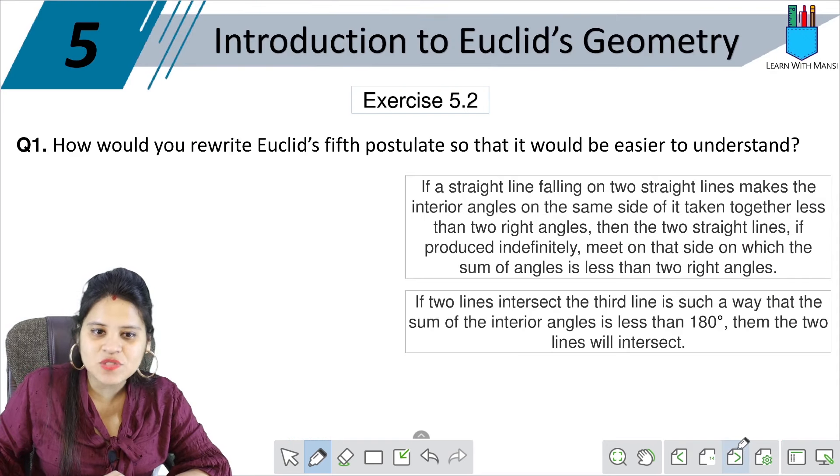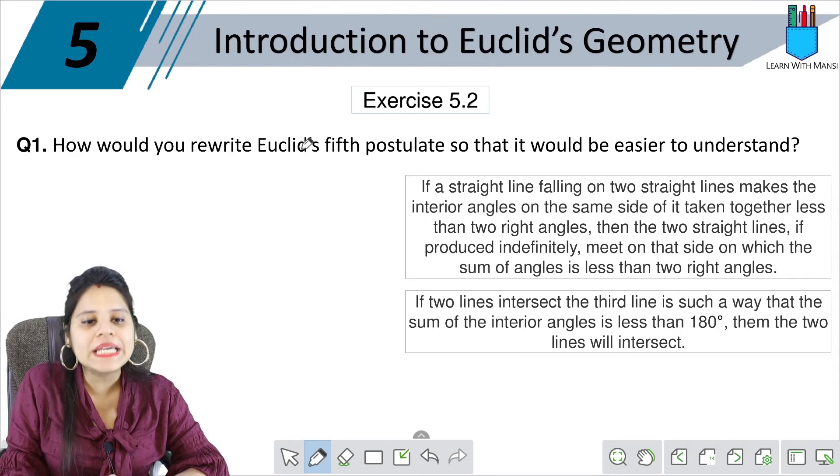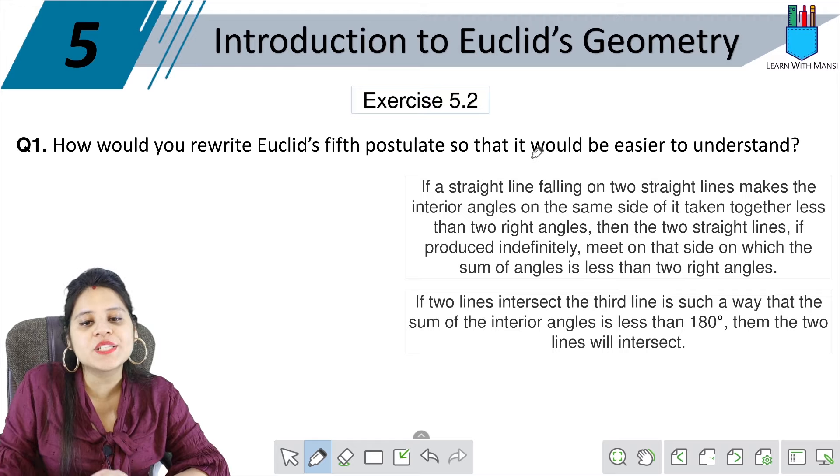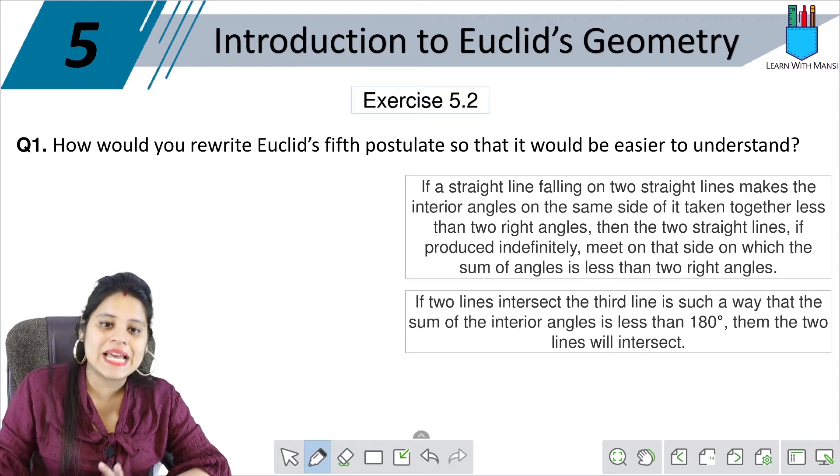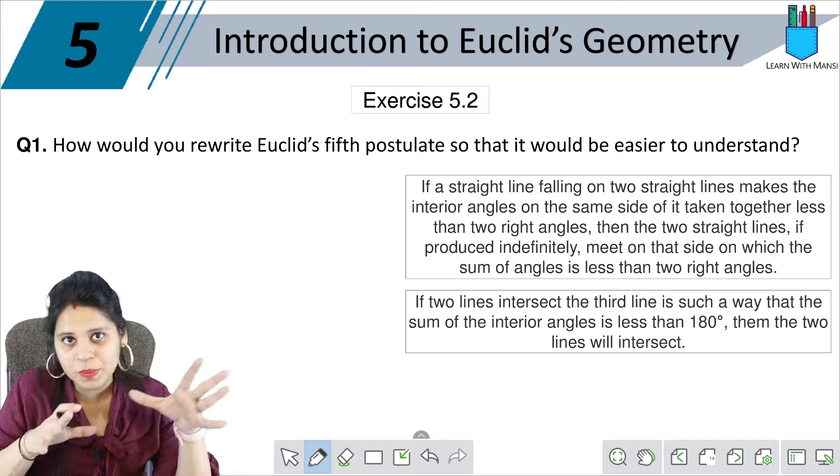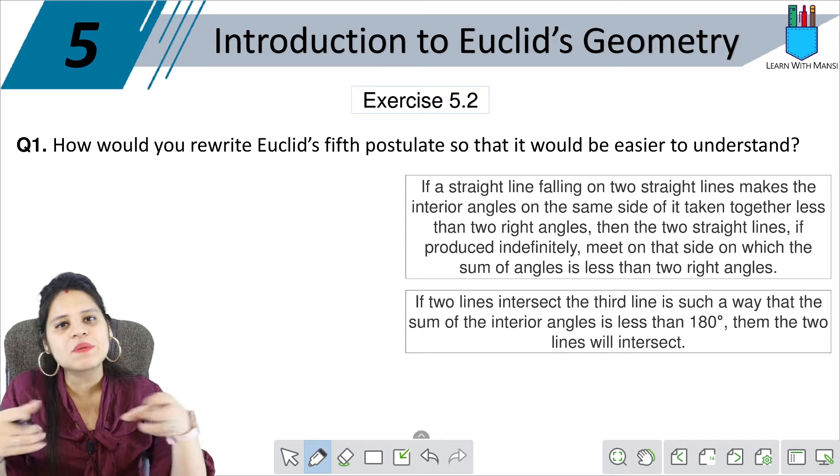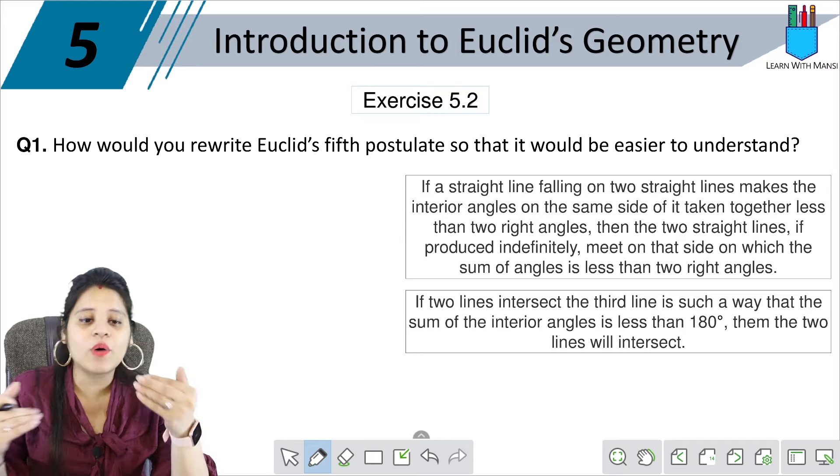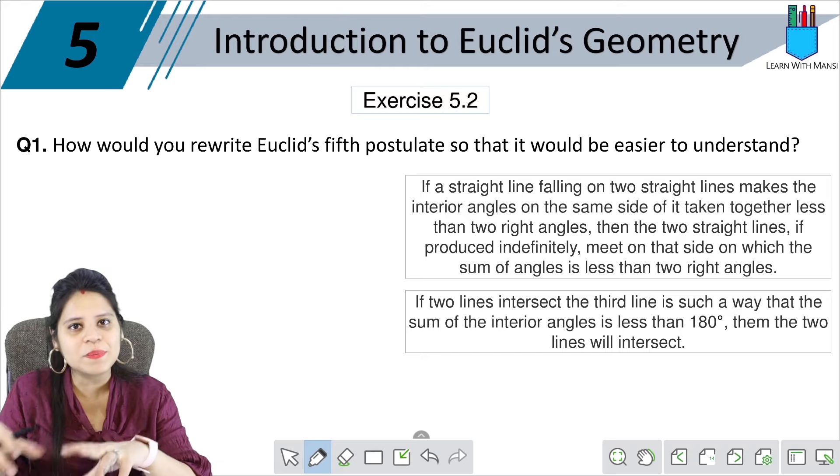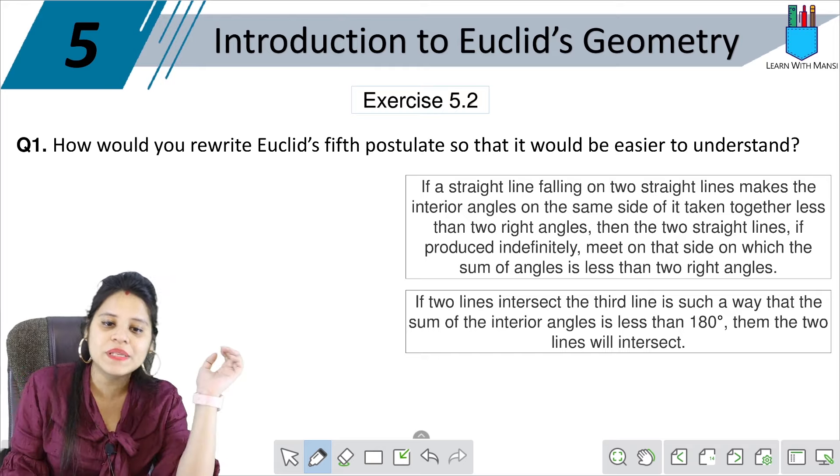Question number 1 in exercise 5.2: How would you rewrite Euclid's 5th postulate so that it would be easier to understand? When you studied in the introduction, the postulate is complex and complicated. So if you rewrite it in simple words, how can it be written? Before I remind you of what?